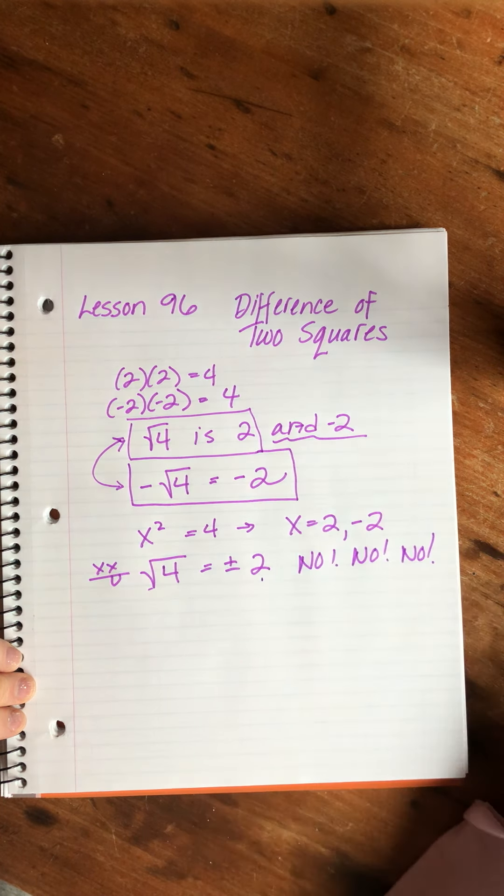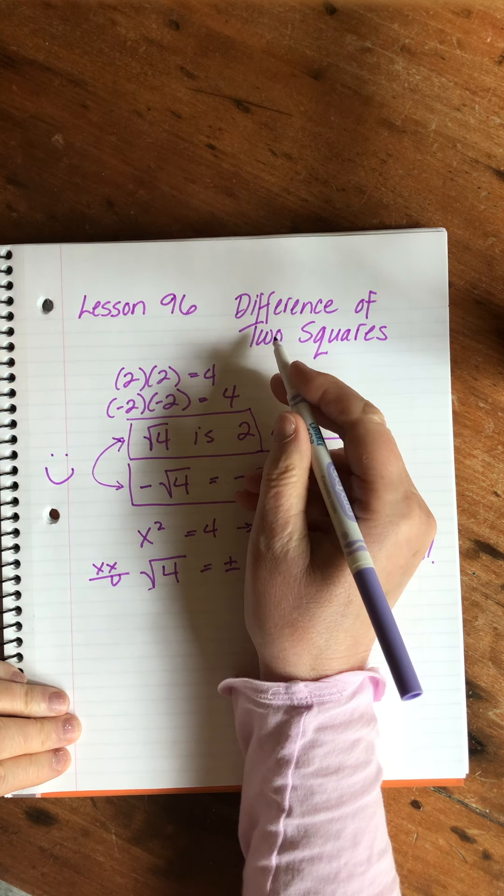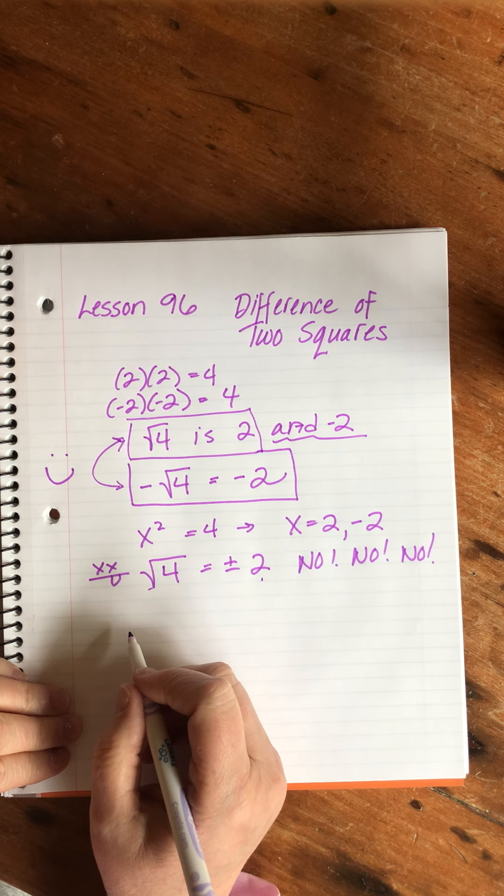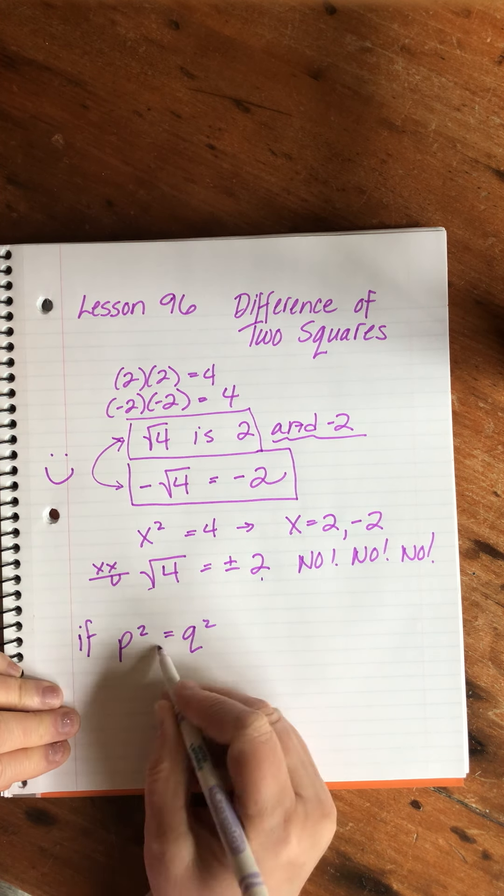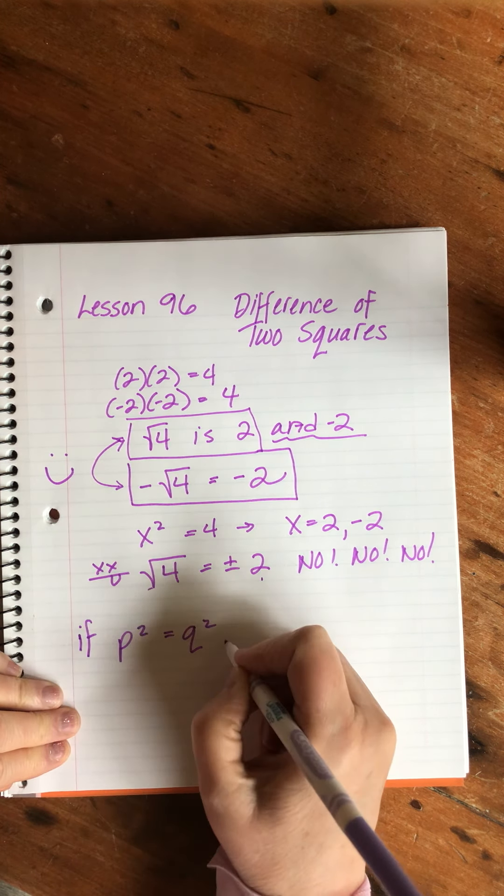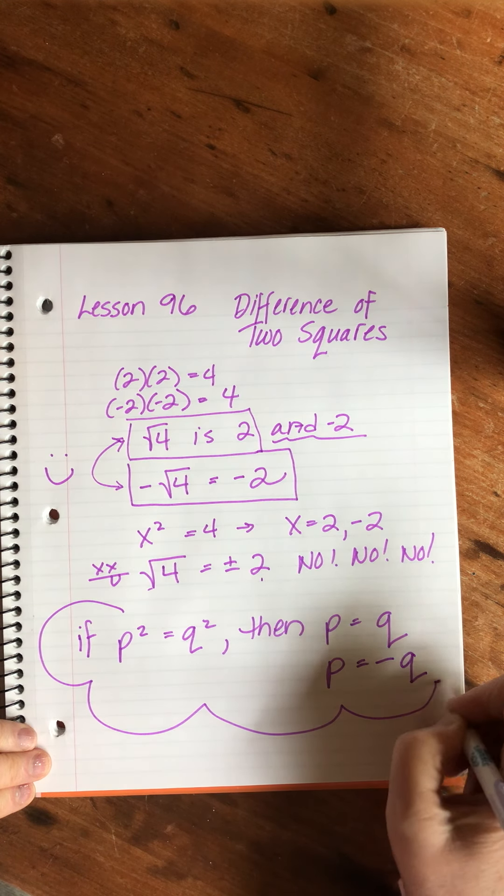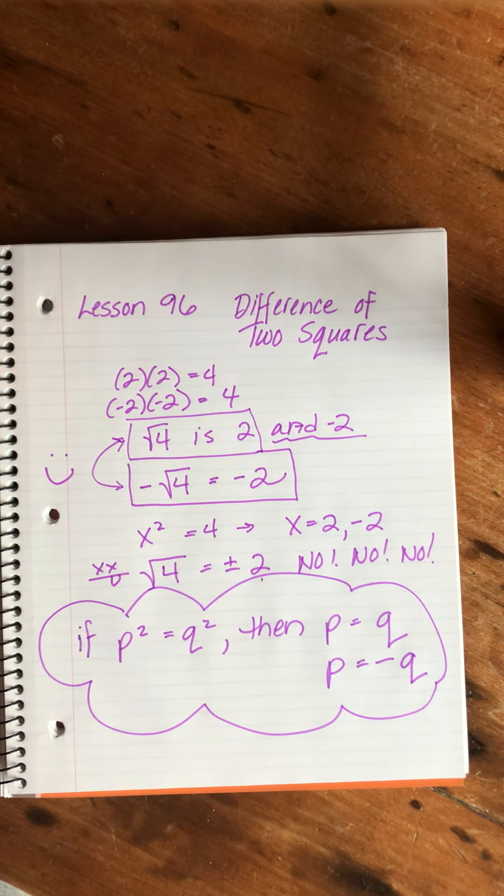In the difference of two squares, if p and q are real numbers, we say that if p squared equals q squared, then p equals q and p equals minus q. That is what we want to hold onto for our lesson today.